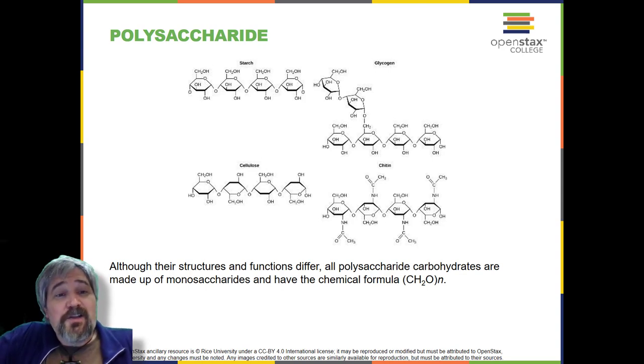Cellulose. Cellulose is one of the most abundant natural biopolymers. The cell walls of plants are mostly made of cellulose, which provides structural support to the cell. Wood and paper are mostly cellulosic in nature. Cellulose is made up of glucose monomers that are linked by bonds between particular carbon atoms in the glucose molecules.